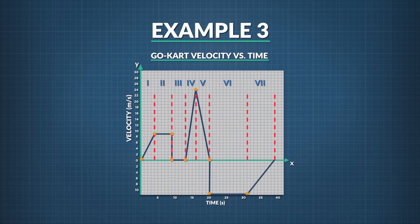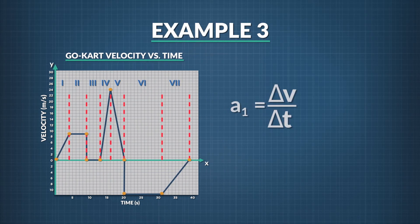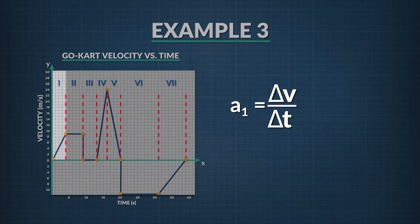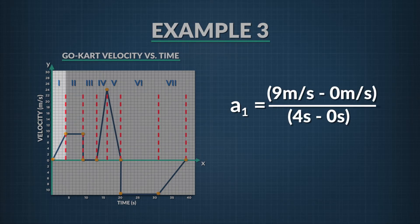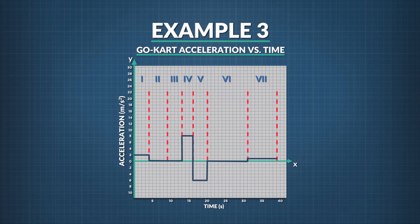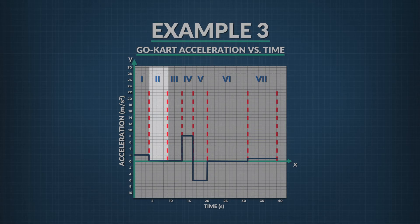We draw that line in and now have our completed velocity versus time curve for the go-cart. Now we can begin on the acceleration versus time chart. Acceleration is defined as an object's change in velocity divided by its change in time. In the first region, the go-cart's velocity goes from zero meters per second to 9 meters per second in four seconds. Plugging these values into the equation, we find the go-cart's acceleration in region one rounds to 2 meters per second squared — the go-cart is speeding up in the positive direction. In region two, the change in velocity is zero, which means the acceleration is zero as well. In region three, the change in velocity is zero again, so acceleration remains zero.